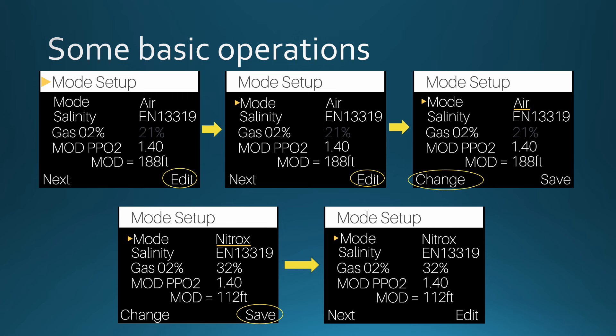Notice that the gas O2 percentage is no longer grayed out — it is set to 32%, based on the nitrox gas you have defined. The buttons have also reverted to Next and Edit. This is just an example of how the Shearwater Peregrine works. Remember, every dive computer is different when it comes to menus and setup.